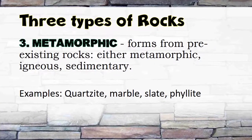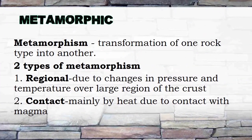Metamorphic rocks form from pre-existing rocks — either metamorphic, igneous, or sedimentary. Examples: quartzite, marble, slate, phyllite. Metamorphism is the transformation of one rock type into another. Two types of metamorphism: 1. Regional — due to changes in pressure and temperature over a large region of the crust. 2. Contact — mainly by heat due to contact with magma.